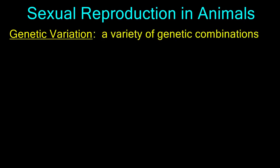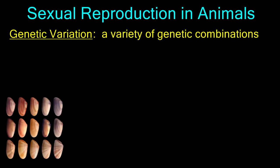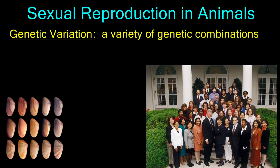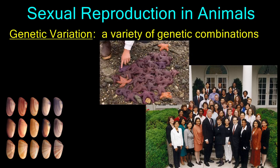Sexual reproduction in animals results in populations that have genetic variation, a variety of genetic combinations that give each individual its own unique traits. This variation is very important to the survival of the species. Genetic variation provides insurance against extinction.